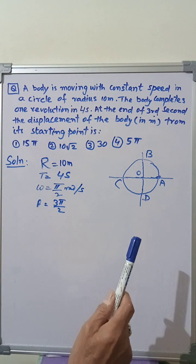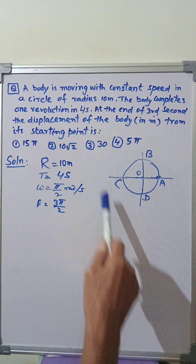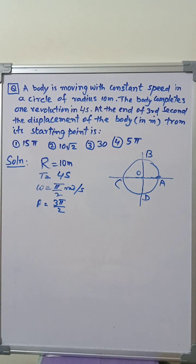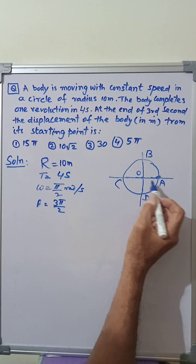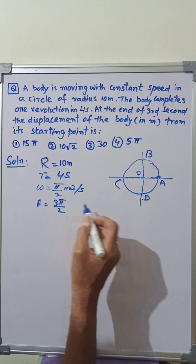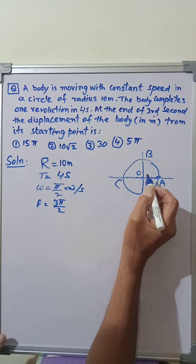The figure shows the motion of the body in the circular path ABCD with center at O. Therefore, let the starting point be A from where it starts. Therefore, after 3 seconds, it has covered an angular displacement of 3π by 2 radians.